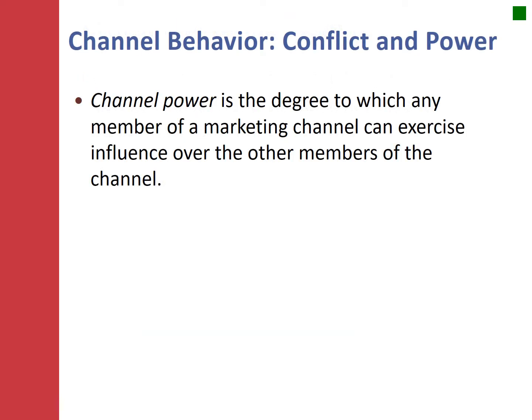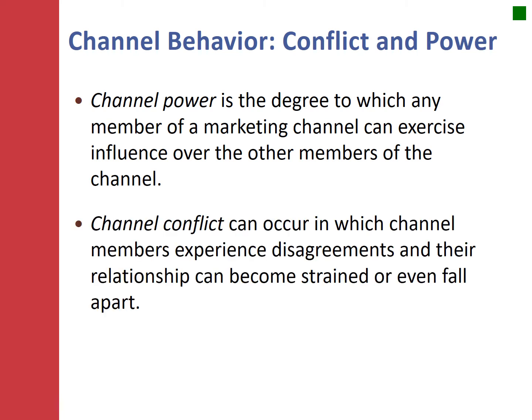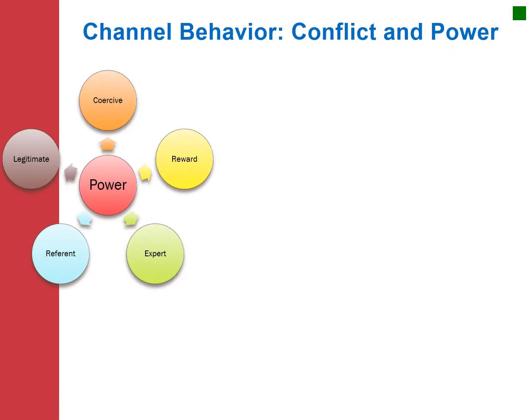This leads to the idea that when we have VMSs or a channel captain who is the boss, we're really focused on two ideas: channel power and channel conflict. Channel power is the degree to which any single member of the marketing channel can and does exercise power or influence over other channel members. Conflict happens when we have disagreements among members in the supply chain and the relationship becomes strained or falls apart as a result of that tension.